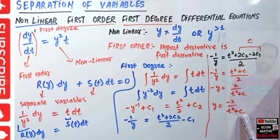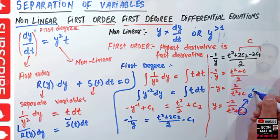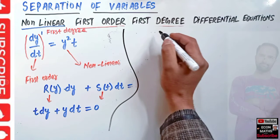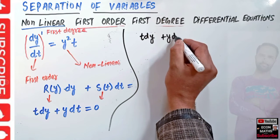Here you can see that the constant of integration is arbitrary until it is evaluated for a particular solution. It will be treated generally. This constant c can also be written as e raised to power c, or in logarithm form as ln(c), which can also be used to express the constant. Now let's take another example.